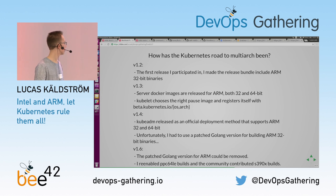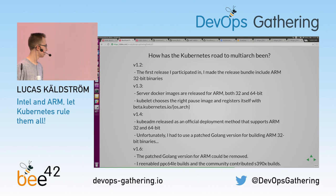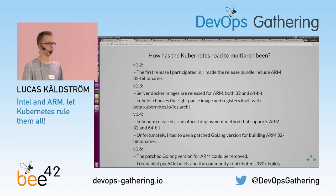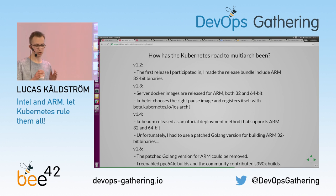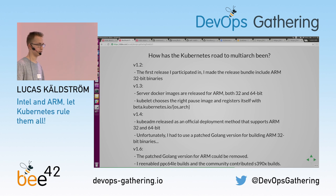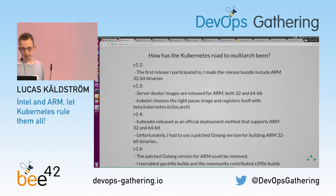With 1.4, kubeadm was released and supported ARM 32 and 64 bit out of the box. Unfortunately, one or two weeks before the release something in the Golang implementation broke, and I had to start hacking on Golang and received a patch from the Google team. So in 1.4 and 1.5, the Kubernetes ARM builds used not the official Golang but a custom patched one. This is fixed in Go 1.8 though. Now we can use Go 1.8 and the internal Golang problem has been resolved. Also, PowerPC and S390X support is now provided.